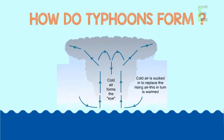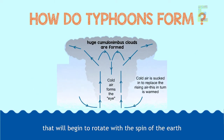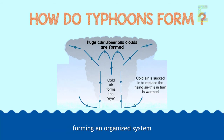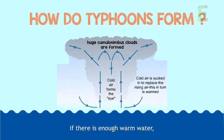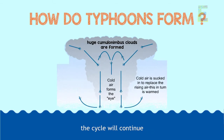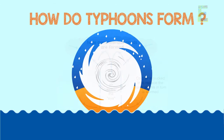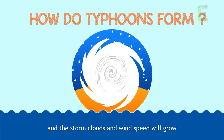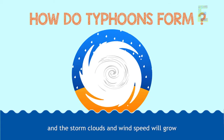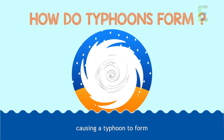This cycle causes huge storm clouds to form that will begin to rotate with the spin of the earth, forming an organized system. If there is enough warm water, the cycle will continue and the storm clouds and wind spins will grow, causing a typhoon to form.